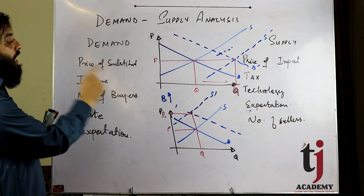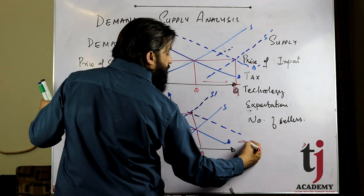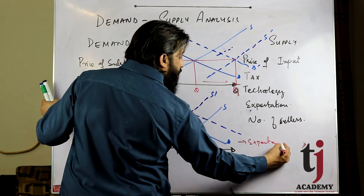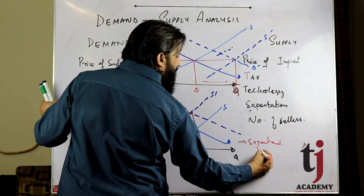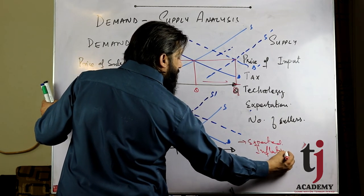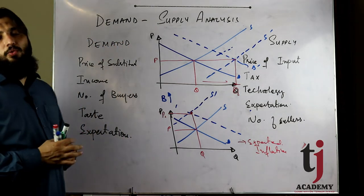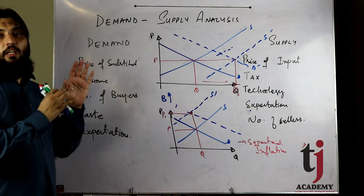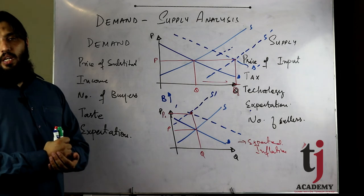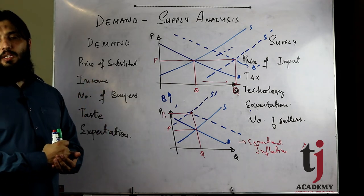Expected inflation — consumer side और producer side दोनों affected होते हैं। तो यह demand-supply दोनों को simultaneously shift करता है — double shift का case है। So I hope this covers the demand-supply analysis and market mechanism.